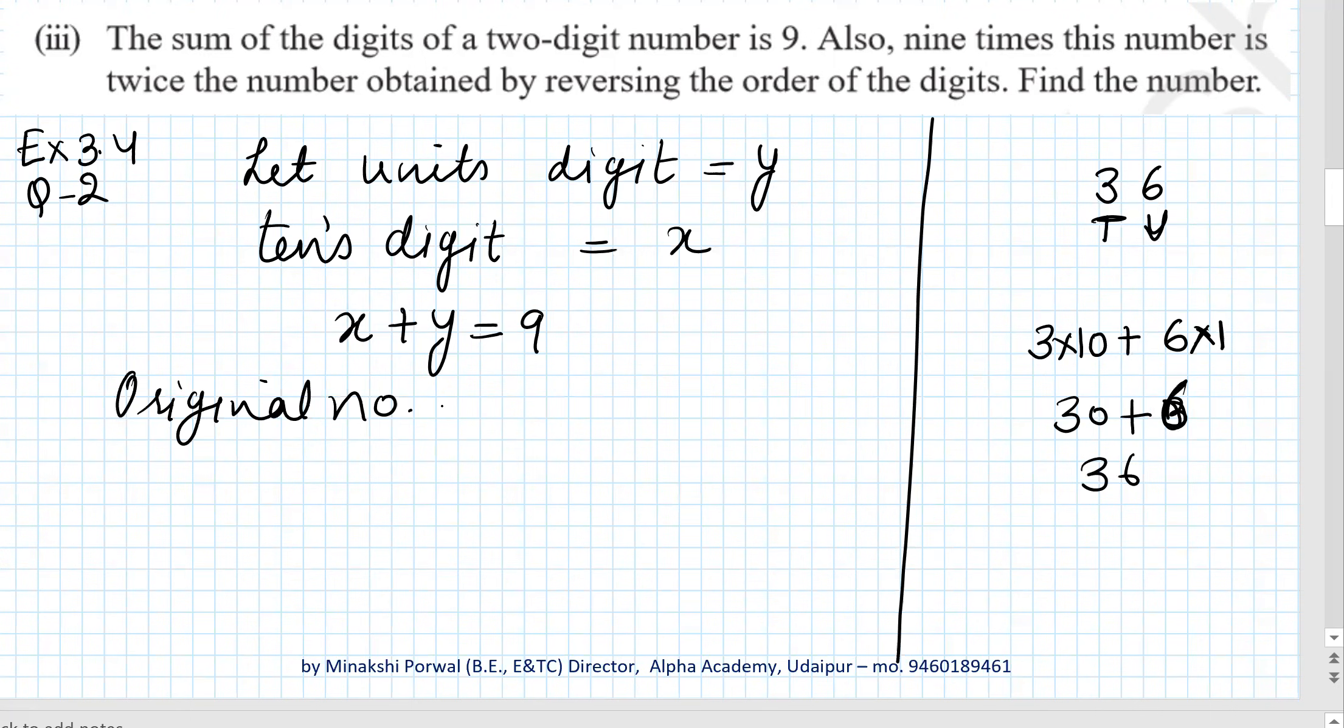So original number will be units place multiplied by 1 and tens digit multiplied by 10. This will be the original number, that is 10x plus y.